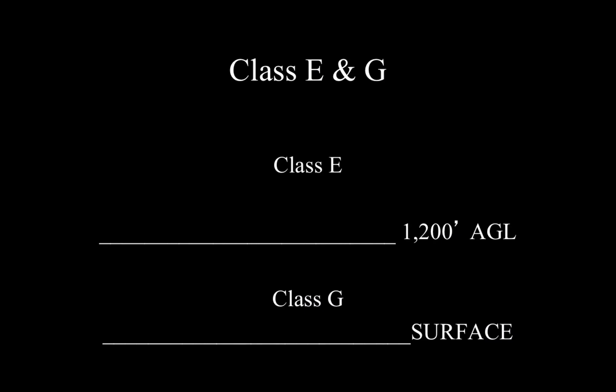We'll talk about what it means to be in E or G — is there a communications requirement, or is there a weather requirement? I'll preface this by saying it's all about weather, and that's it. There's no communications requirement for VFR pilots in E or G, even though you can reach a controller in those airspaces. It's just a weather requirement airspace alone. So G to 1,200 feet and E above 1,200.